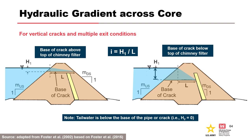An embankment dam may have multiple exit locations. For example, in a homogeneous cohesive embankment with a partial-height chimney filter, if the base of the crack is above the top of the chimney filter, the head loss occurs over length L measured from the downstream face to a projection of the upstream water level intersection. If the base of the crack is below the top of the chimney filter, the head loss occurs over length L measured from the downstream intersection with the filter to a projection of the upstream water level intersection with the core face, using the downstream slope of the chimney filter instead of the downstream face.